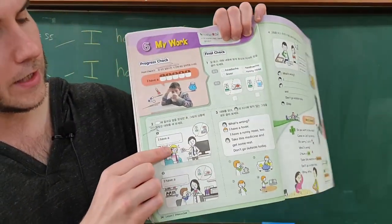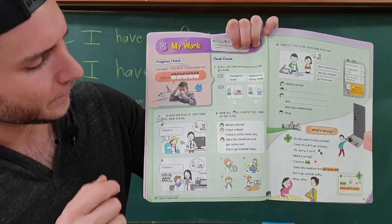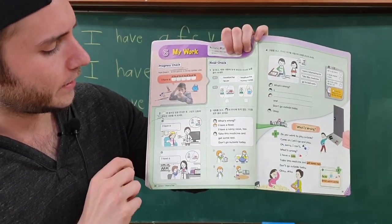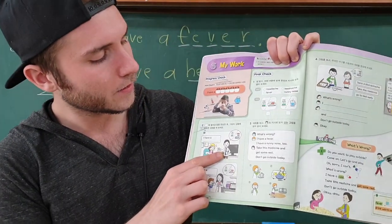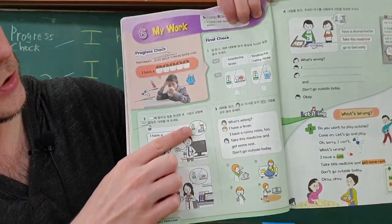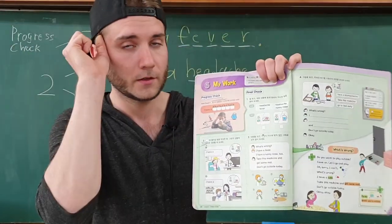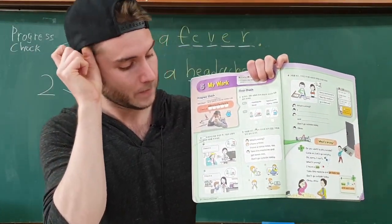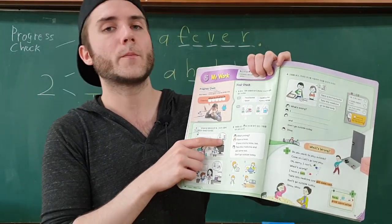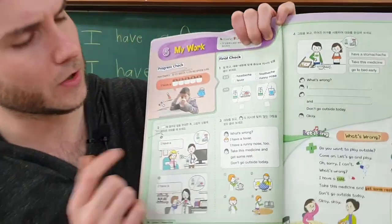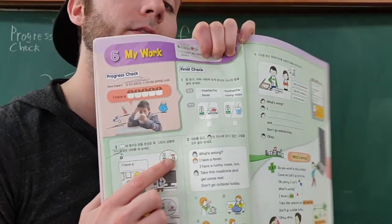If you look closely, she's holding her head — she's in pain up there. The doctor is also saying something. We have a little picture of medicine and a bed and a clock, so remember your key expressions: he's going to be saying 'take this medicine and go to bed early.' The clock says eight, so eight PM — that's pretty early.